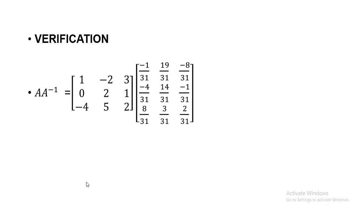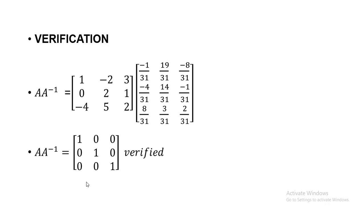For verification, we multiply A with A inverse. The multiplication rule remains the same: multiply row by column for all combinations — first row with each column, second row with each column, third row with each column. If the result is an identity matrix, then the inverse we calculated is verified as correct.